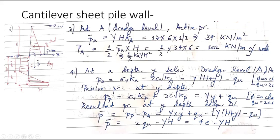The active force PA is calculated from this triangular distribution — area equals half base times altitude, i.e., half × Ka × γH², giving 102 kN per meter of wall. Now at a depth Y below the dredge level, we will calculate what the active pressure and passive pressure are, because there is a resultant pressure on this side of the wall.